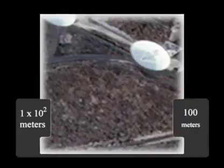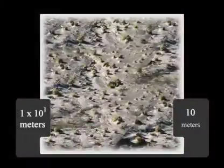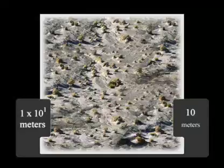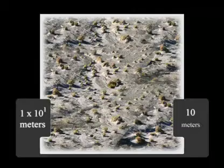So if we now go down by a factor of 10, closer to the ground, so that we're now 10 meters from the ground, you can see little shrubs and bushes growing out of the plains there.